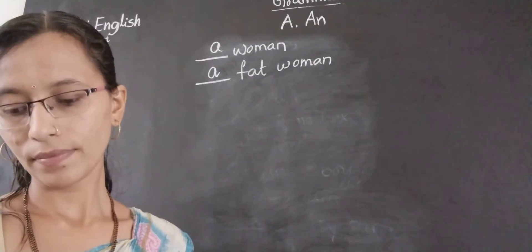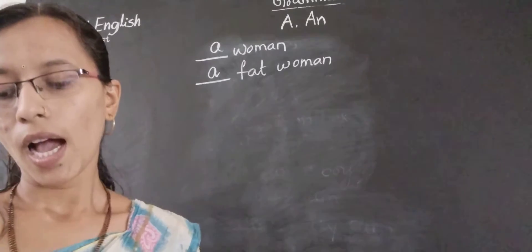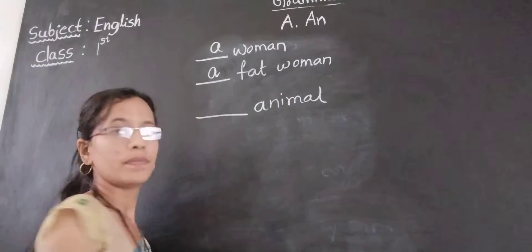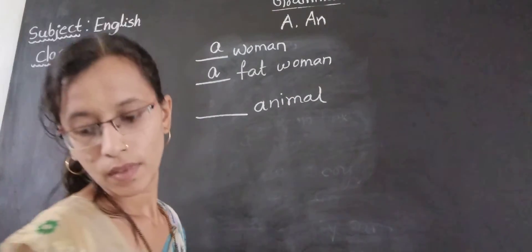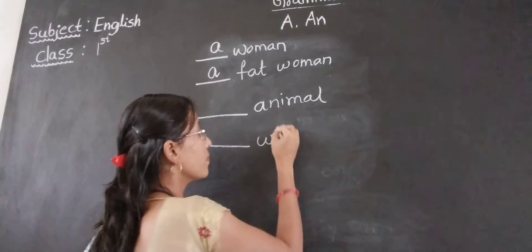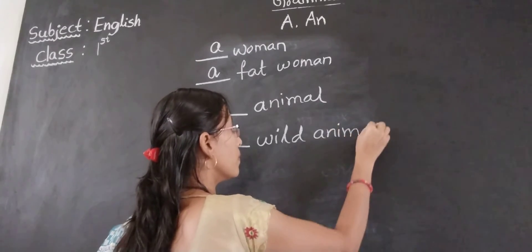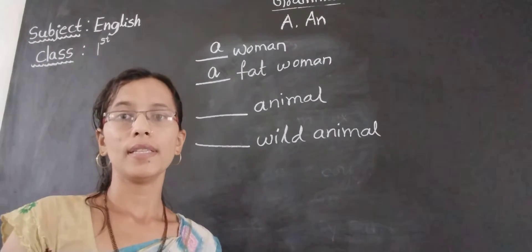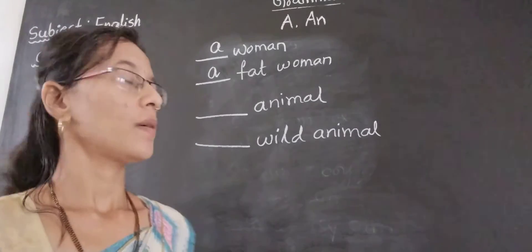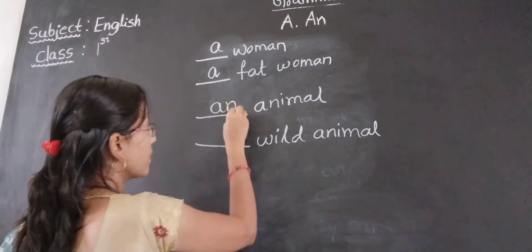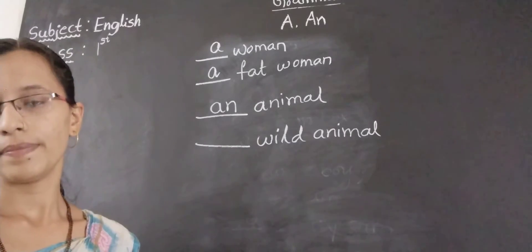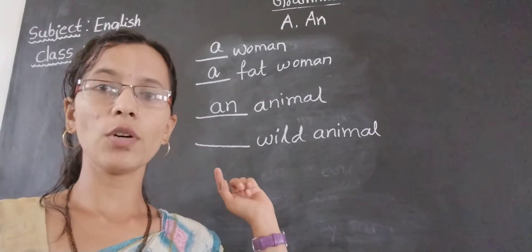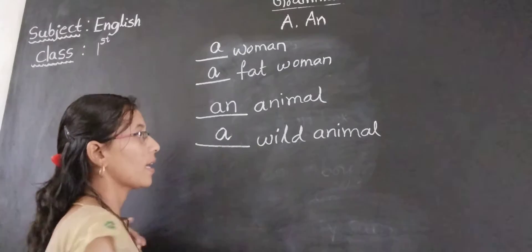Then animal, wild animal. Animal — A sound. A means that is a vowel sound. Beginning of vowel sound, we have to use AN. AN animal. Then wild — W is there, W is a consonant. Beginning of consonant, use A. A wild animal.